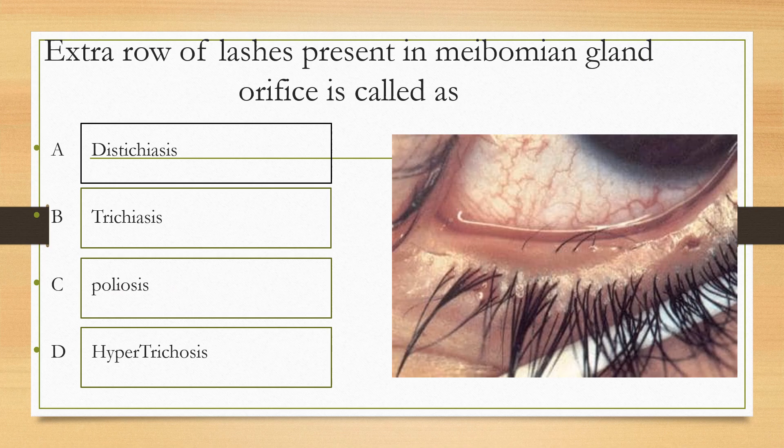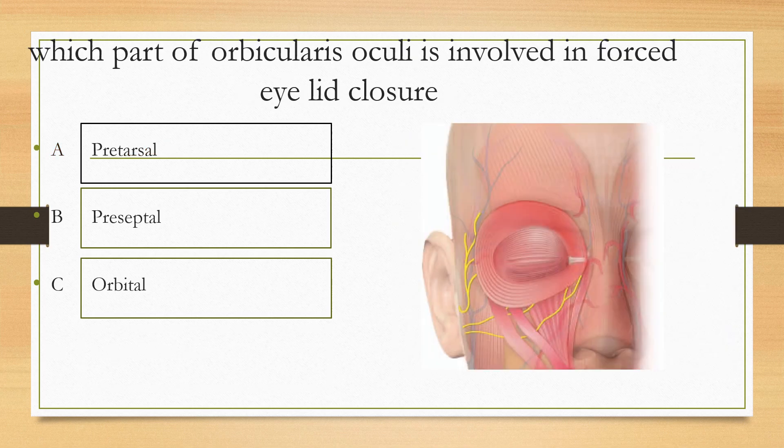Third question. The extra row of lashes present in the meibomian gland orifice is called: option A distichiasis, option B trichiasis, option C poliosis, option D hypertrichosis. The answer is option A, distichiasis.